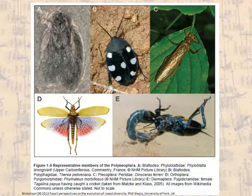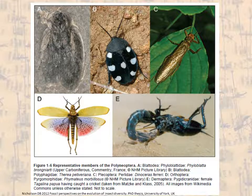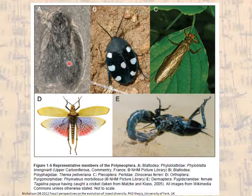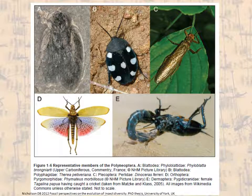At the same time that we get palaeopterous insects in the fossil record, we also find another group known as the Polyneoptera. Unlike the Palaeoptera, these insects have evolved the ability to fold their wings flat over their backs. Very early on in their evolution, we find cockroach-like organisms, and they have left descendants which include the true cockroaches themselves, the praying mantises — which are really just a predatory group of cockroaches — and also the termites, a group of social cockroaches.